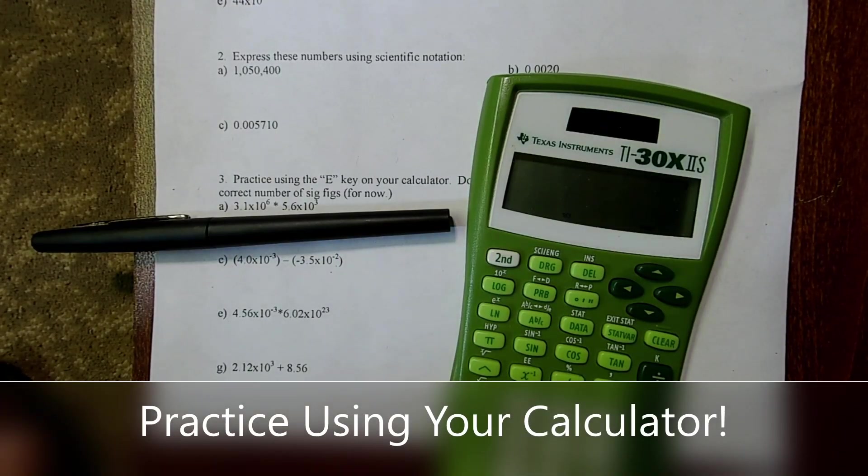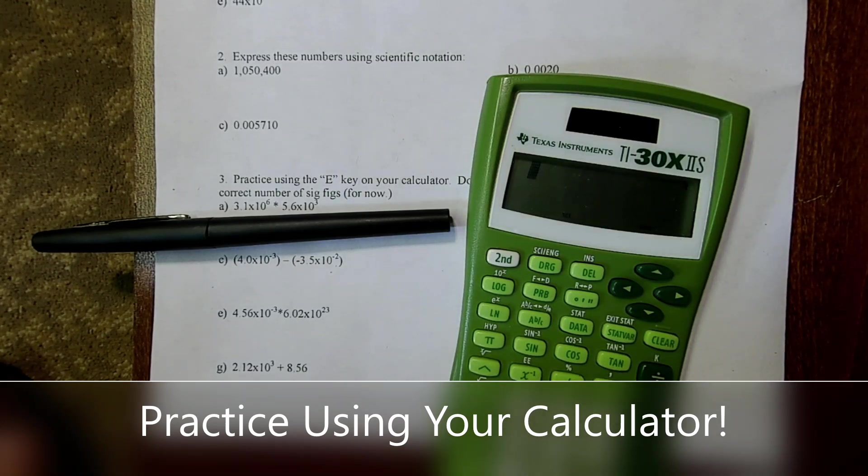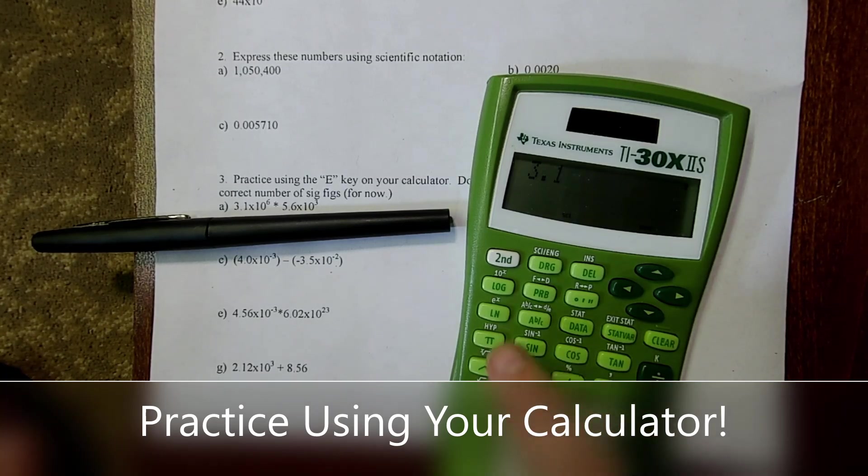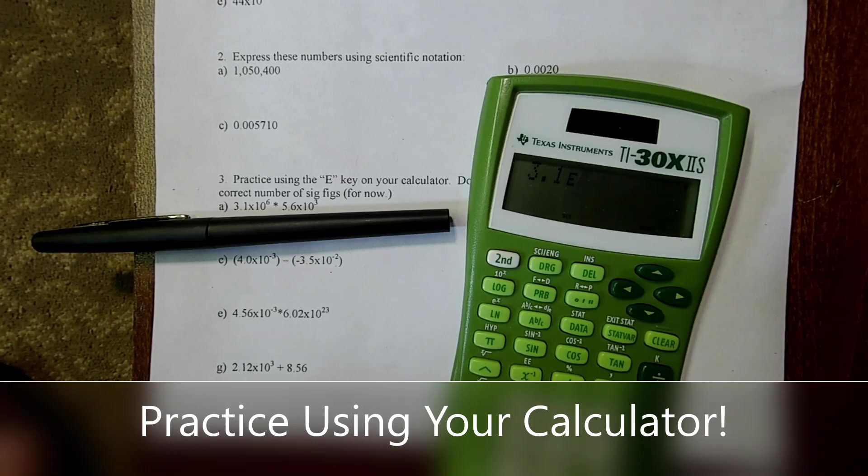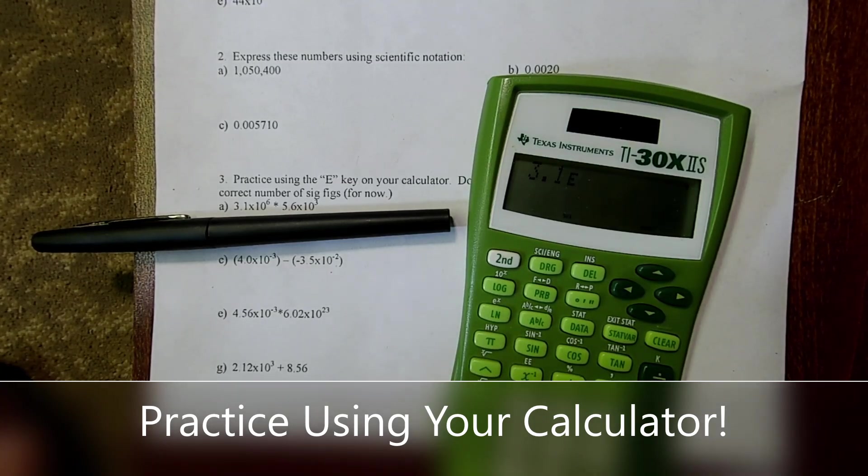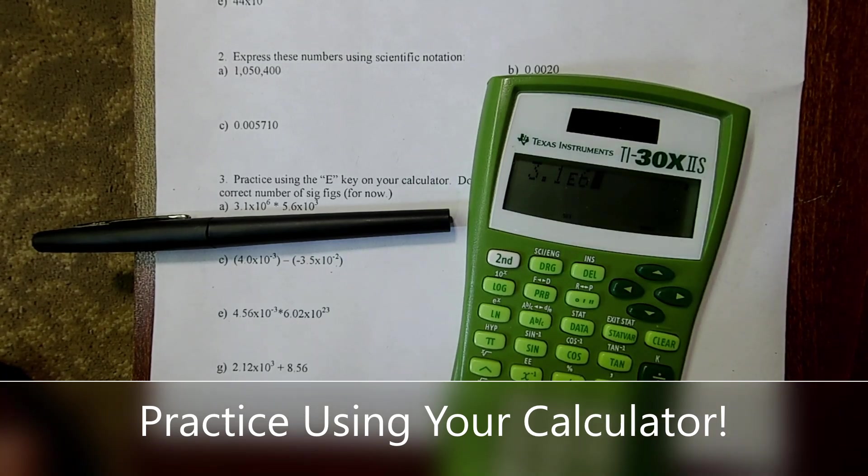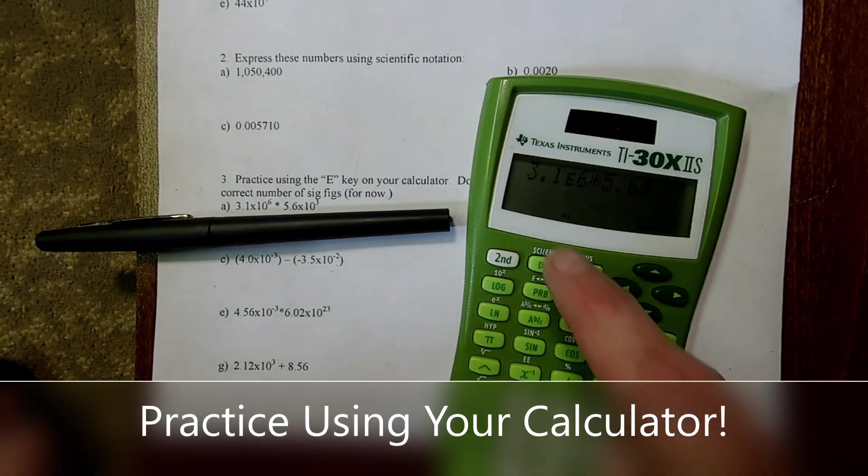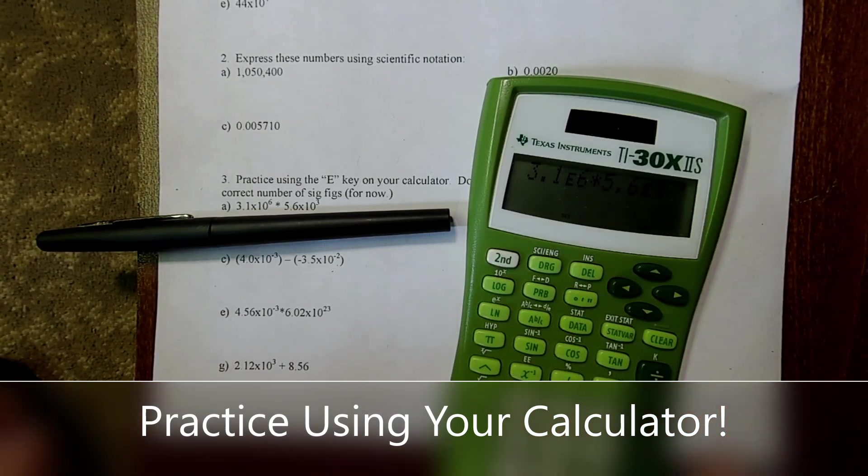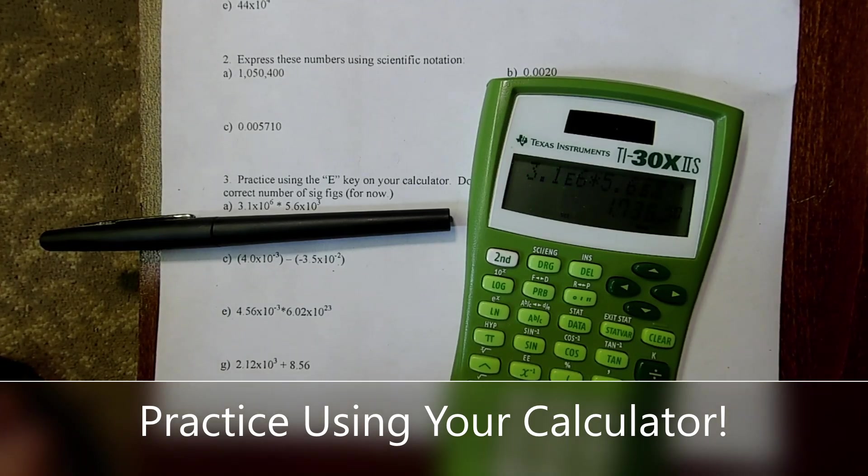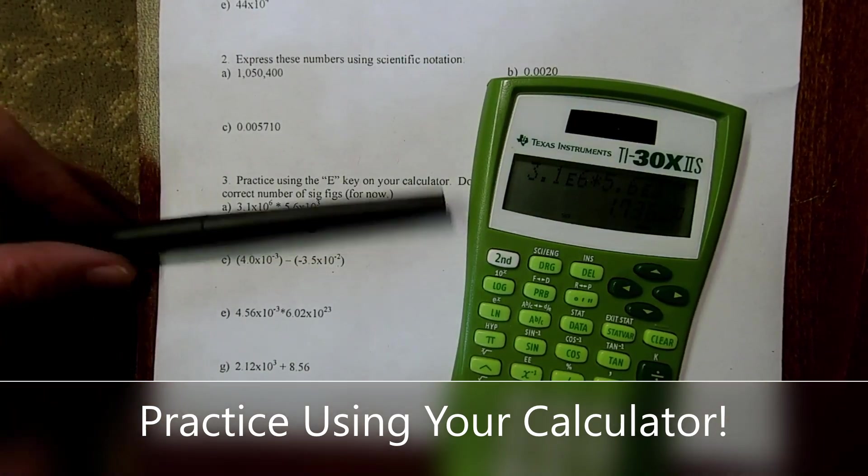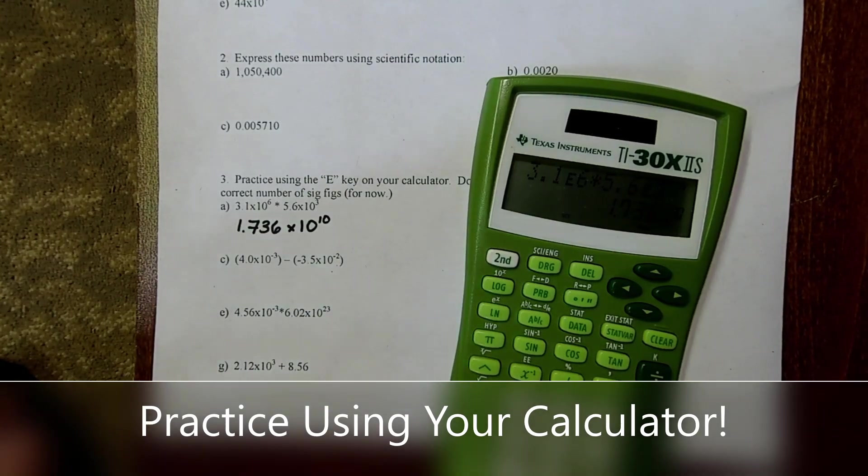Let's practice entering scientific notation correctly in the calculator. So for letter A, it's 3.1 times 10 to the sixth. So I'm going to do 3.1. And you remember it's 2nd. Look for that double E. And it's going to pop up as a single E. So 3.1, hit a 6, times 5.6. And I'm going to do the same thing. 2nd, E, and this time to the third power. And I get 1.736 times 10 to the tenth.